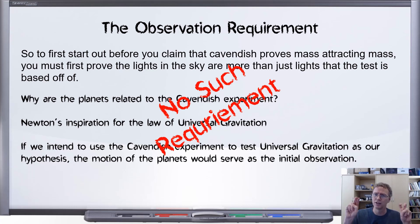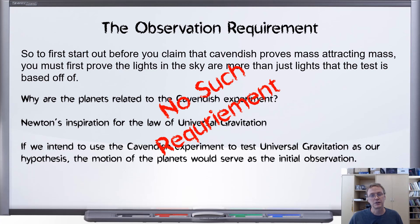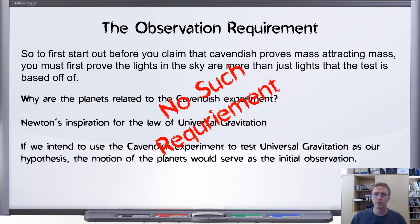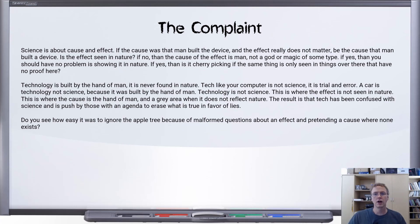Whatever it is that inspires me to do the experiment is my initial observation. I can take Newton's law of universal gravitation that I saw in a textbook as my observation. I can go and watch Blue Marble Science do this experiment and that can be my initial observation. So if you think there's some logical hole in my analysis, I want you to explain why — not just give me a citation that says step one is the observation. Explain why the observation is important. Where is my thinking flawed? Why is observation a requirement?